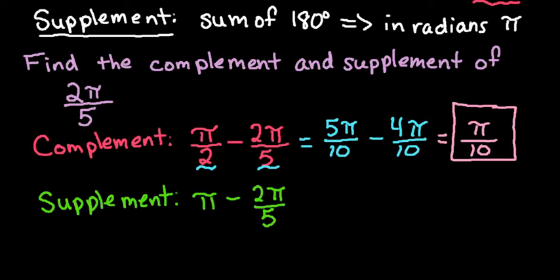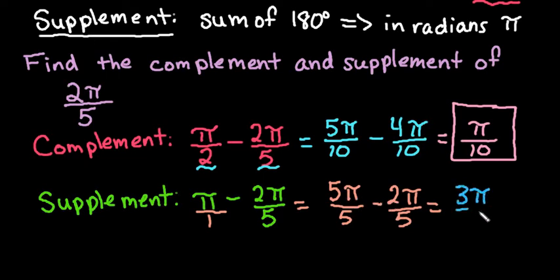And again remember that we have to have a common denominator. So in this case the common denominator would be 5 because this one has an understood denominator of 1. π could be rewritten as 5π over 5 minus 2π over 5. And so if I simplify this, 5 minus 2 gives me 3π over 5. And so the supplement of 2π over 5 is 3π over 5.